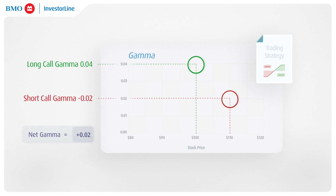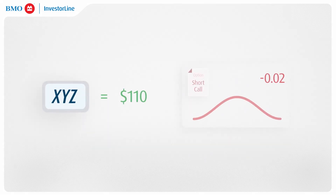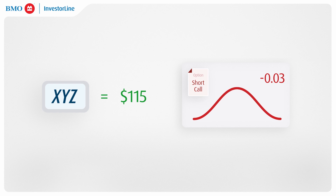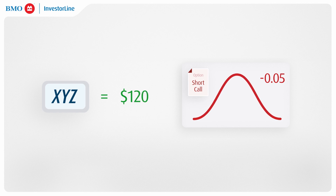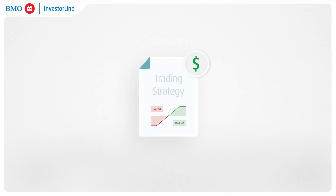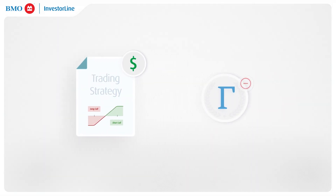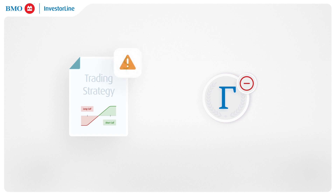Additionally, the higher gamma of the long call, being closer to the money, signifies that upward momentum favors the trade. As XYZ's price ascends past the 110 strike, the short call's gamma increases as the short 110 is now closer to the current stock price. This indicates that the strategy's maximum profit potential has been reached. Beyond this point, gamma turns negative, highlighting a risk zone where additional sharp movements in the underlying could render the strategy unprofitable.